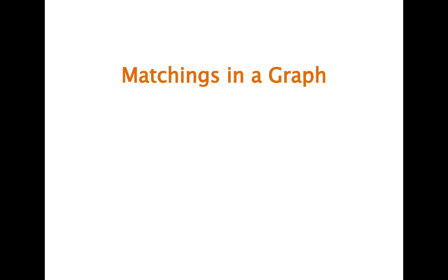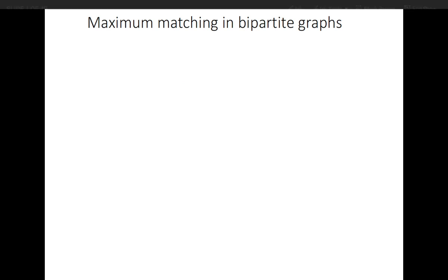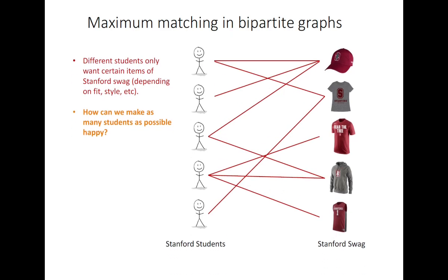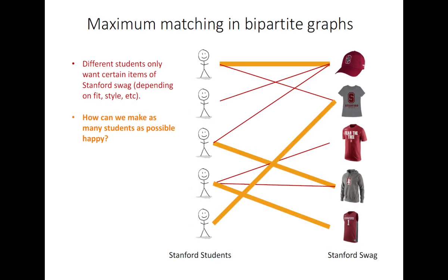Today we are going to start a new section: matchings in a graph. Recall bipartite graphs — it's quite easy to visualize matchings in them. For example, let's say there are five students and five items. Our aim is that the maximum number of students should get the maximum number of items. If we try to match them, we observe that only four students can get four items; it is not possible to match all five.